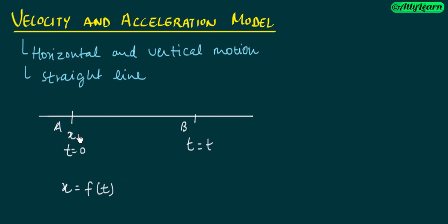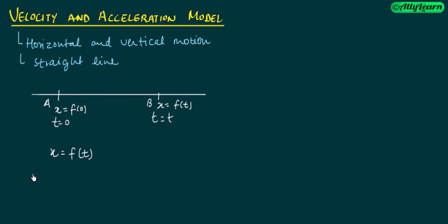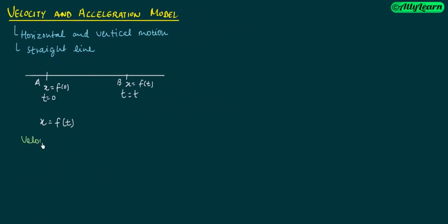Here the value of x is f(0) and here the value of x is f(t). If you call it velocity, then you will know what velocity is. Velocity v(t) is equal to dx/dt, which I can write as f'(t), because x is my function of t. So dx/dt is f'(t).